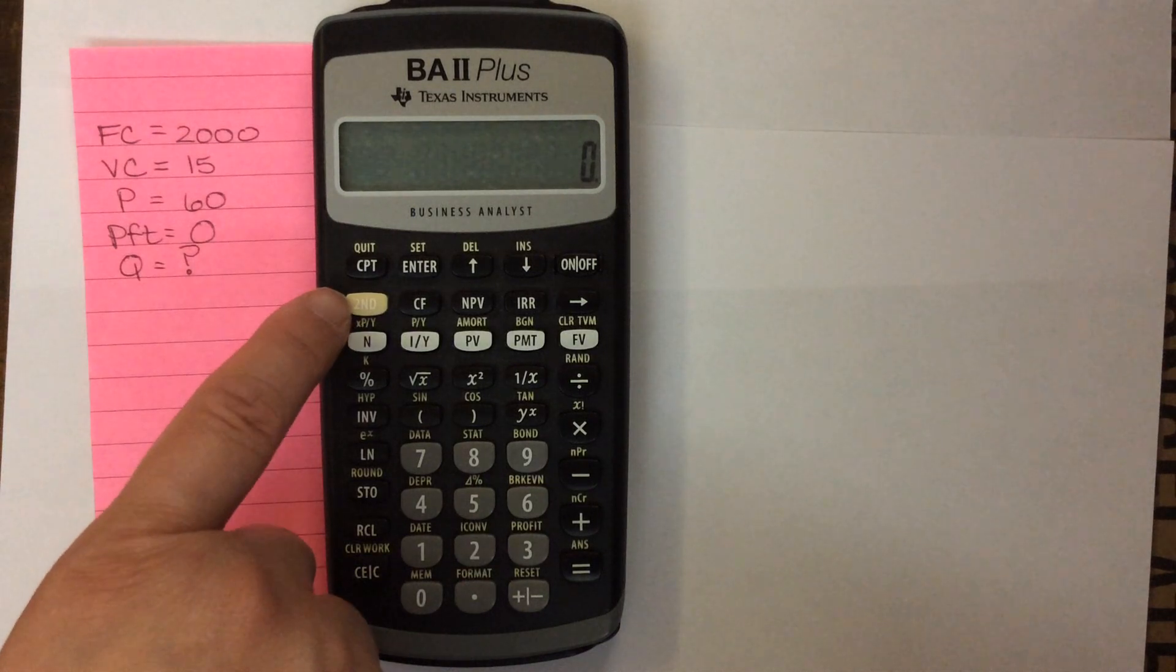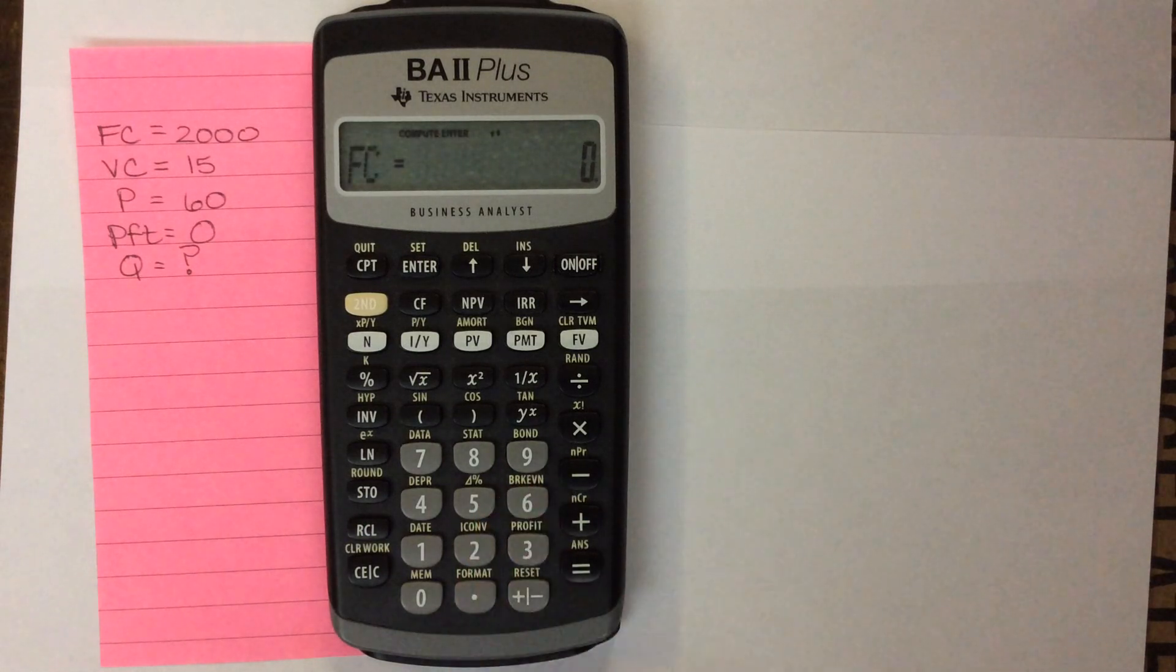Now don't worry about what these variables stand for, I do go over it all in the lesson. So, in order to get into breakeven mode, you're going to go second function and then six. So notice the yellow breakeven above that. And now you've got your list of variables.